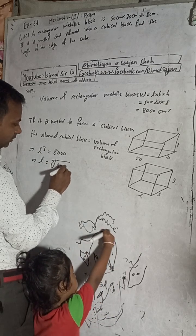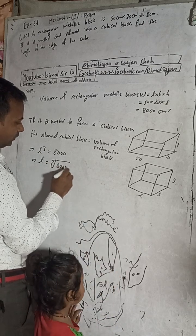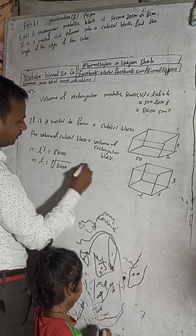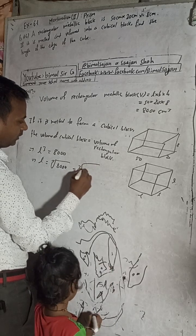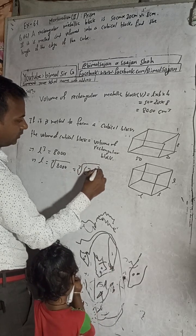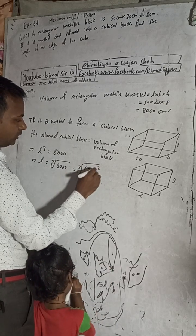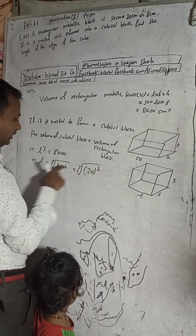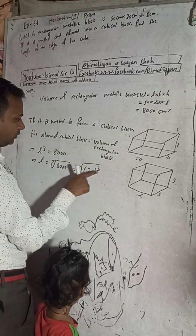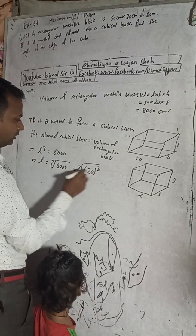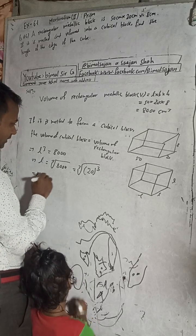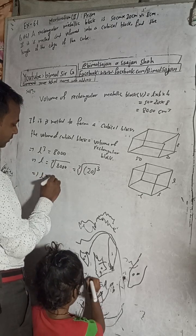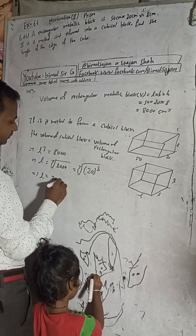So the cube root of 8000 — this is 2 to 4 to 8, so the factors give us 20 cube, because 2 × 4 × 8 = 8 and three zeros, making it 20. So this implies L is equal to 20 cm.